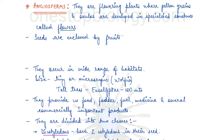In angiosperms, unlike gymnosperms where the ovules are naked, here the pollen grains and ovules are developed in specialized structures known as flowers. Angiosperms are also known as flowering plants.